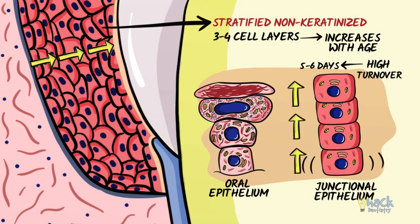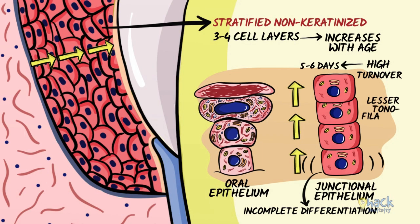But unlike oral epithelium, cells in all layers of the junctional epithelium are incompletely differentiated, and they also possess a lesser number of tonofilaments and desmosomes.